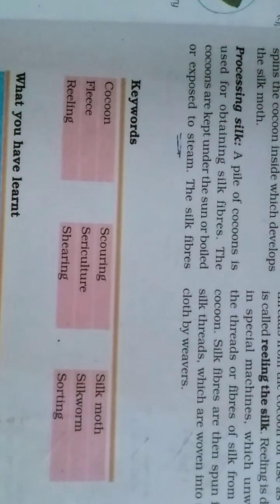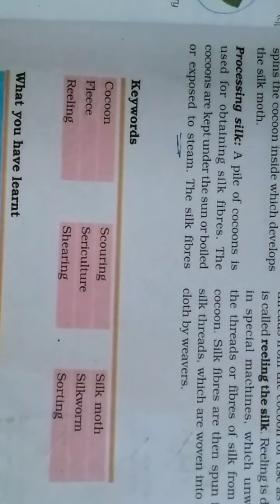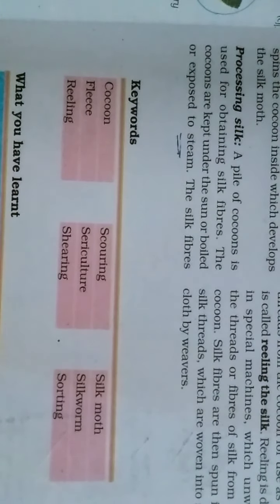Next is sericulture — the process in which the animal silkworm is reared to obtain silk. Next is silkworm — the animal through which the animal fiber called silk is obtained.